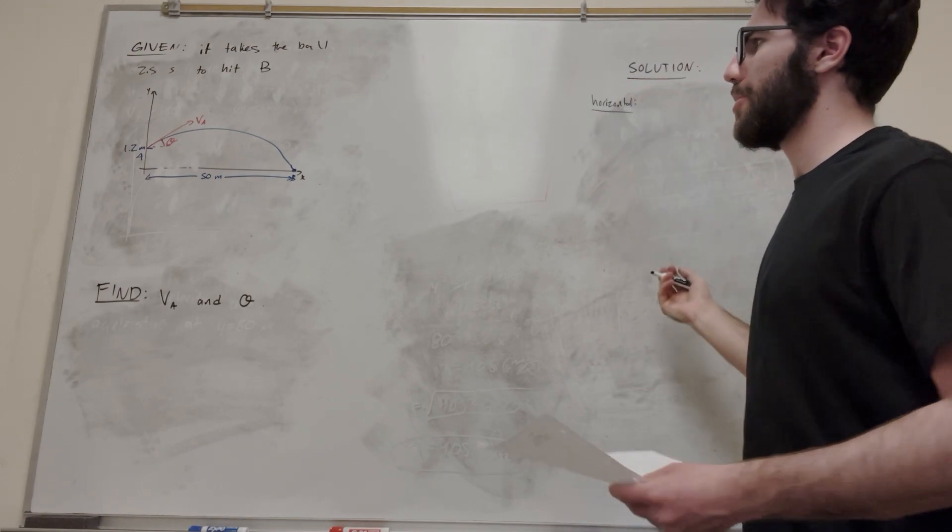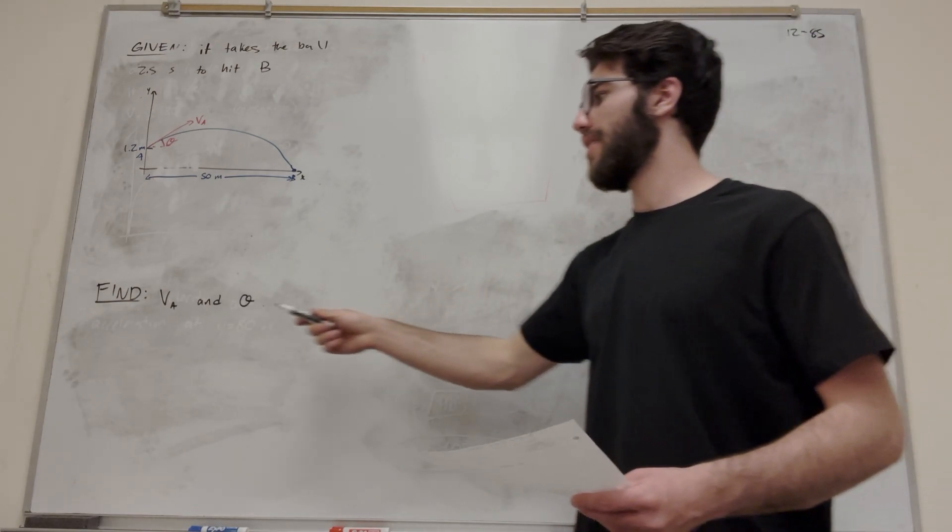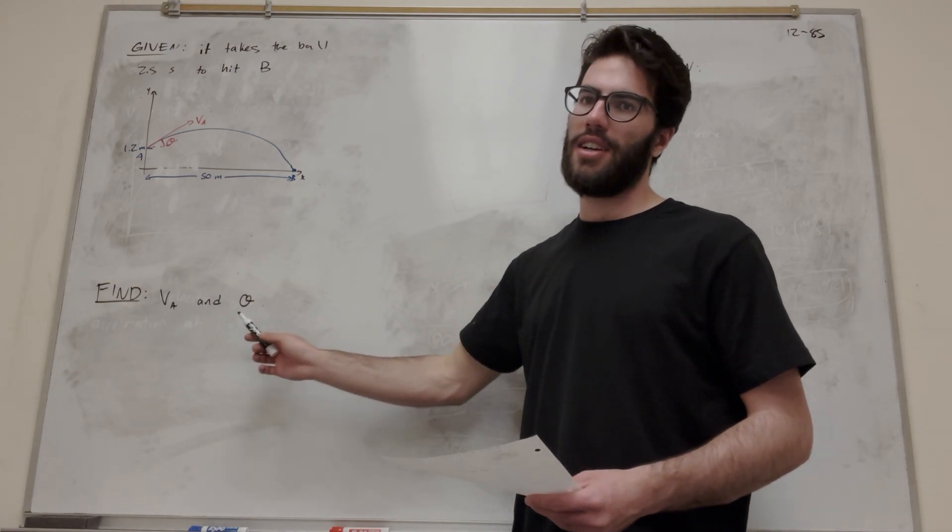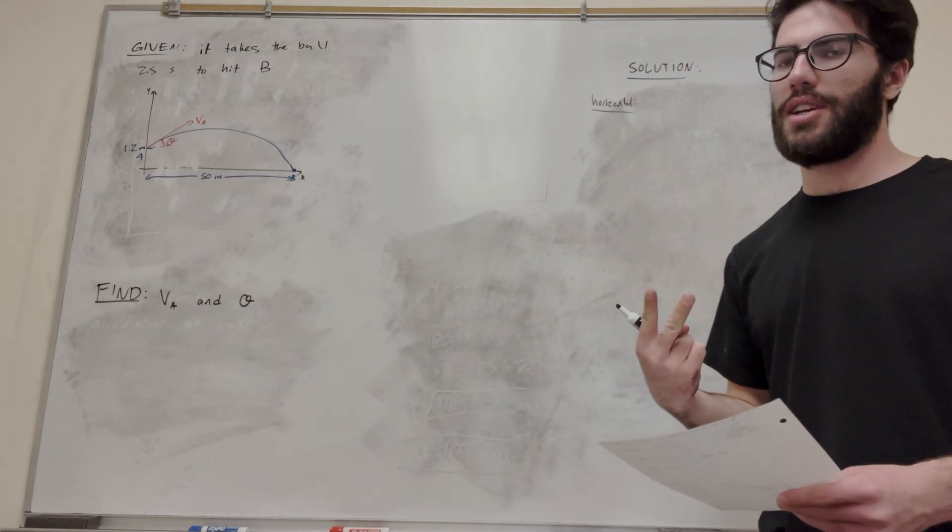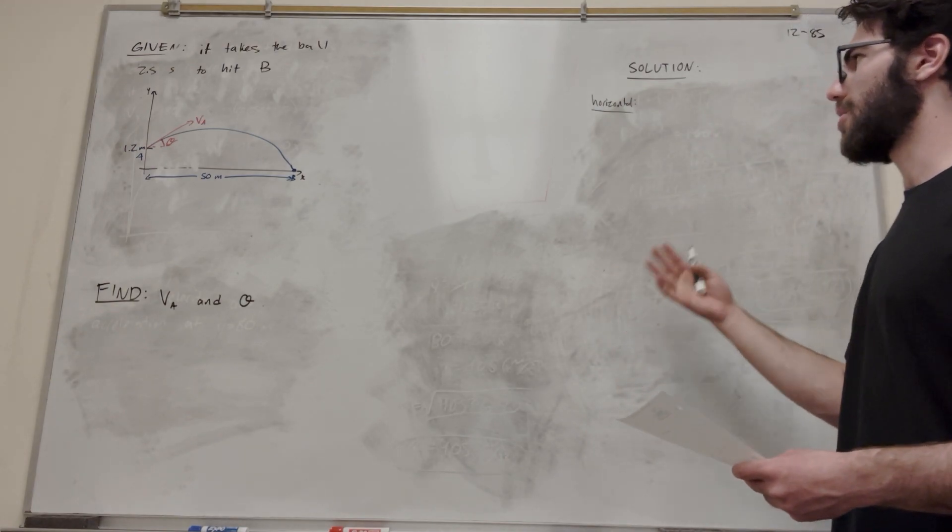So what's our goal here basically? Well, we know time, we know distance, we know height. Our goal is to find velocity initial and theta. So we know we're going to have two unknowns, and we can write two equations to find those. So let's go ahead and write the two equations we know, horizontal and vertical.